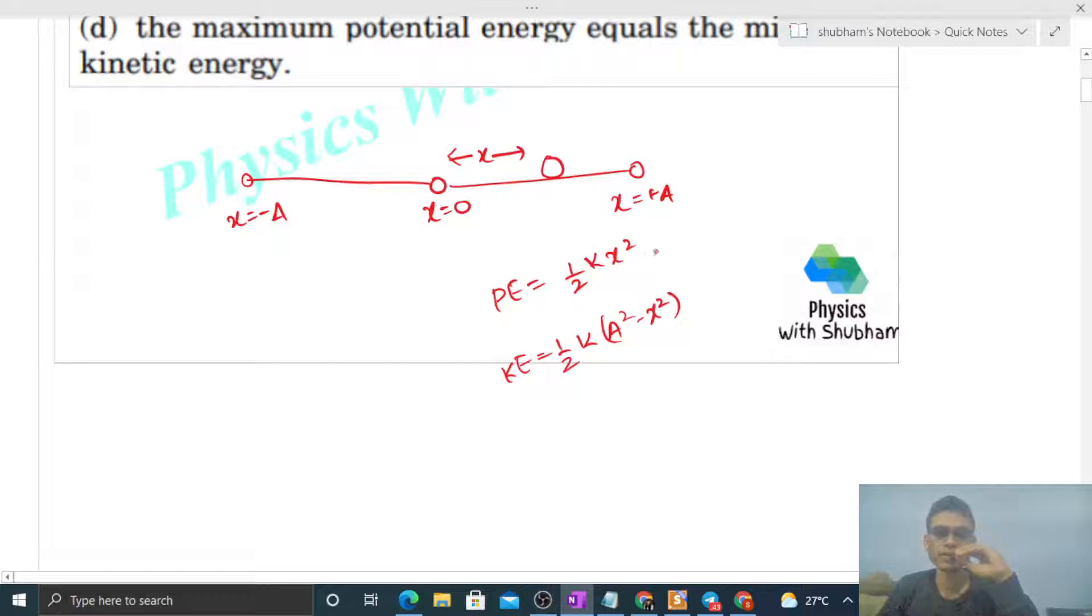Now you can see that the potential energy is directly proportional to x square. It means if x increases, then potential energy will also increase. So what will be the minimum value of potential energy where x is minimum? Now x's minimum value is zero.